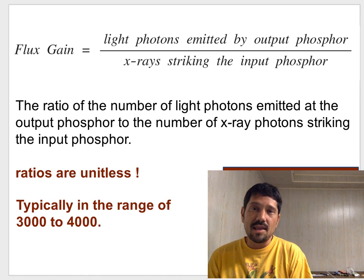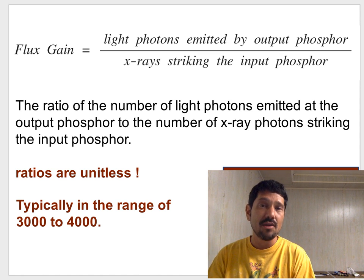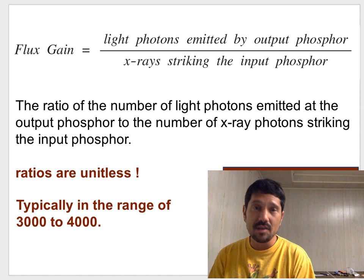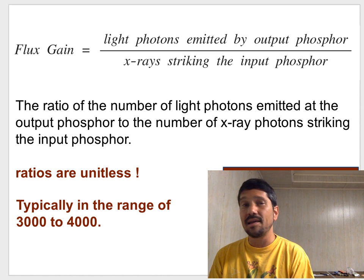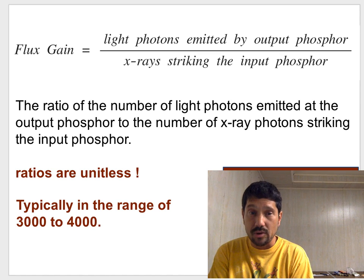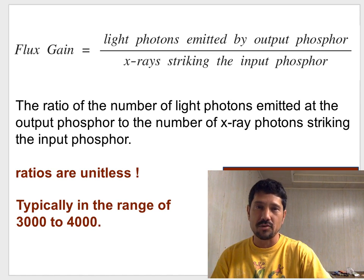The flux gain is looking at the ratio of the number of light photons coming out of the II relative to the number of X-rays that struck the input phosphor. So now we're doing what light comes out divided by what X-rays went in. Again it's a ratio so it'll be unitless. And flux gains are typically in the range of 3,000 to 4,000.